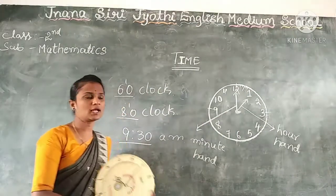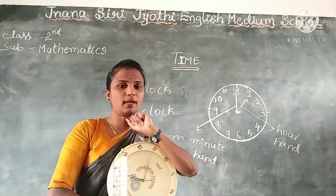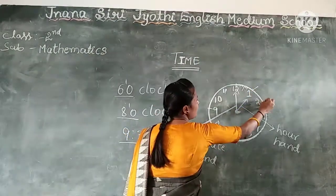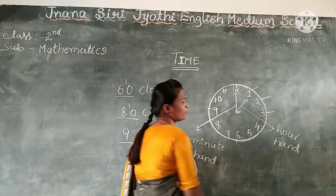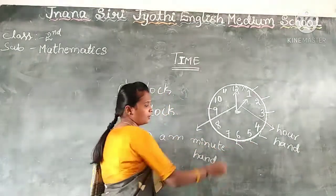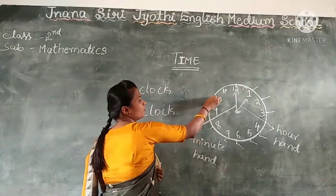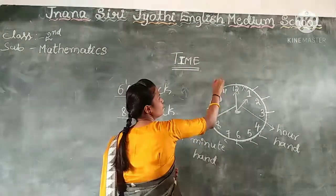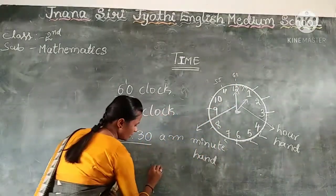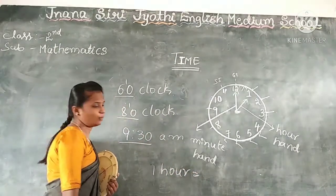Once again, children — for every number there is a 5-minute gap. You know the 5 times table: 5 ones are 5, 5 twos are 10, 5 threes are 15, 5 fours are 20, 5 fives are 25, and so on up to 5 twelves are 60. So for one full round, how many minutes are there? 60 minutes. Very good!